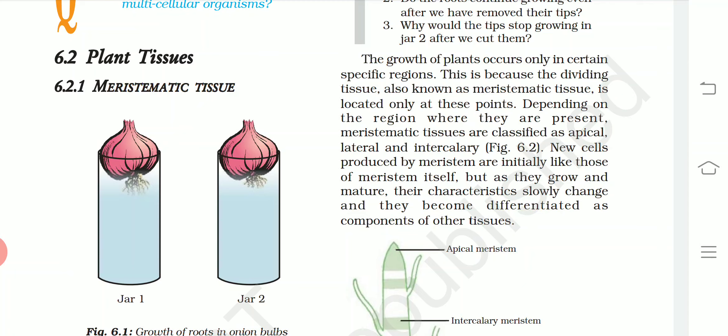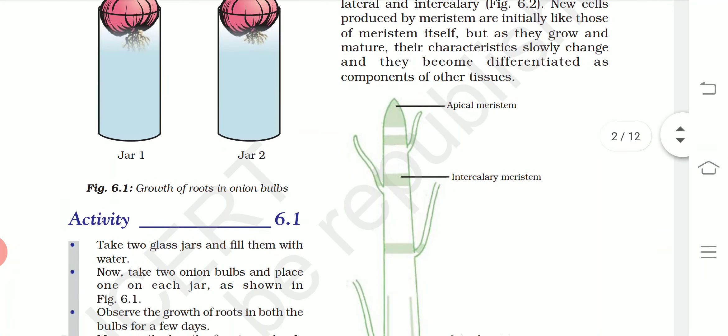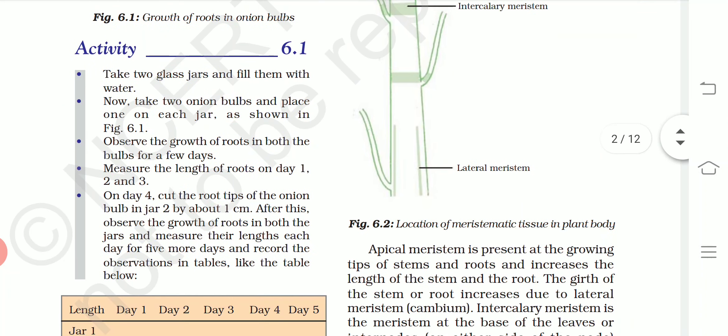New cells produced by the meristem are initially like those of the meristem cells themselves, but as they grow and mature, their characteristics slowly change and they become differentiated as components of other tissues. The first type is apical meristem, then intercalary meristem, and finally lateral meristem at the base.